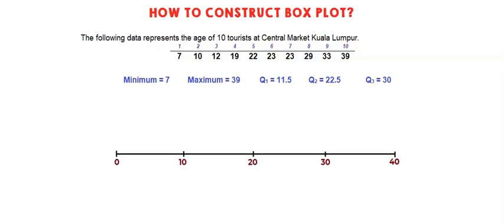If you look here, Q1 is 11.5. So here is 10, so my 11.5 is somewhere around here. You use graph paper in order to get the accurate value.